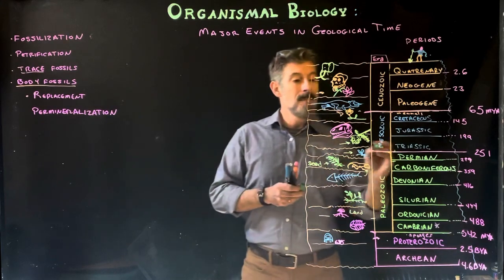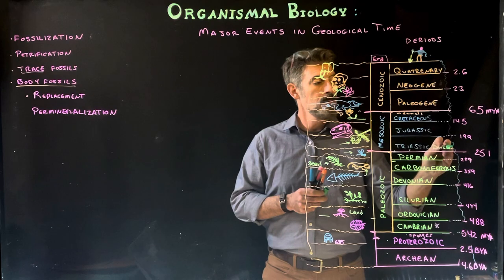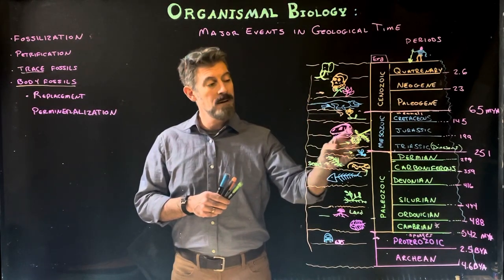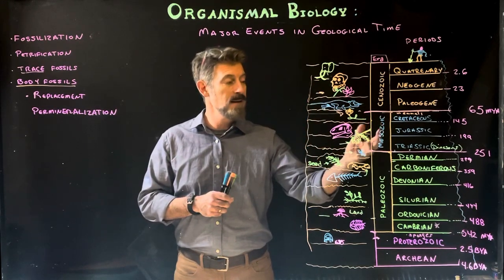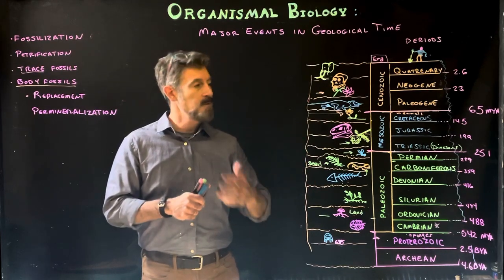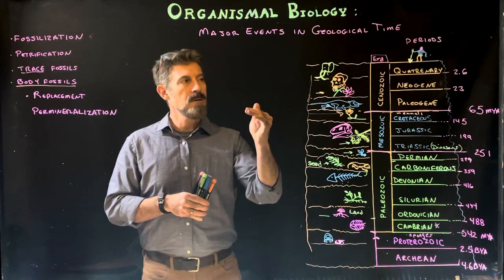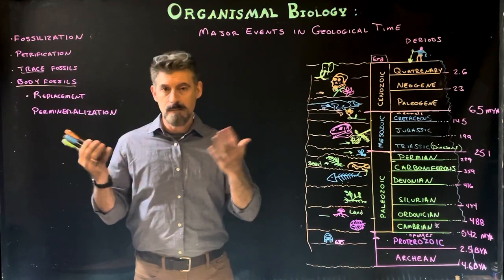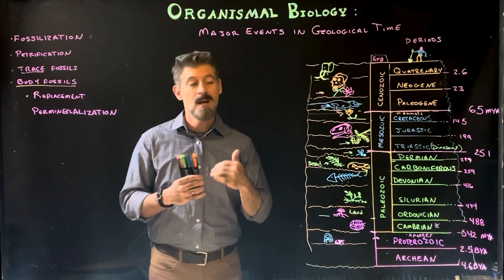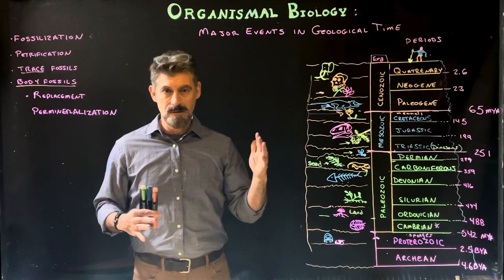The Triassic is where we see both the first ancestors of mammals and the first dinosaurs. Cone-bearing plants—gymnosperms—start to become incredibly dominant through the Jurassic, with great forests of fir trees and pine trees. It's worth noting that many famous dinosaurs didn't exist at the same time—many were separated by tens of millions of years. For example, T-rex and Stegosaurus had no overlap at all.